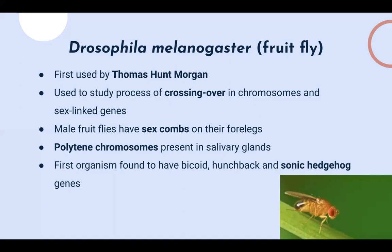Fruit flies also possess homeotic and Hox genes for embryo development, and analogs of these genes have actually been found in vertebrates — so homeotic and Hox genes are pretty important. Additionally, the fruit fly is the first organism found to have bicoid, hunchback, and sonic hedgehog genes. These unusually named genes are memorable and may come up in toss-ups.